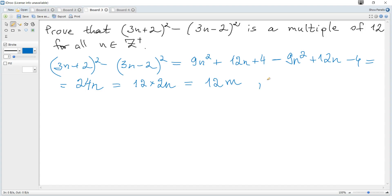So it can be represented as 12 multiplied by some positive integer, let it be m where m is also a positive integer, and hence 12m is a multiple of 12.